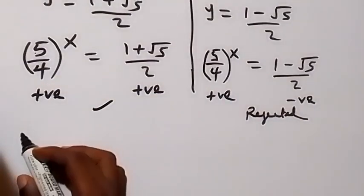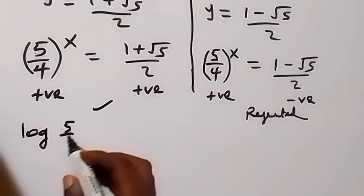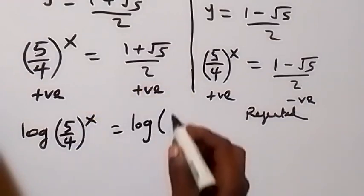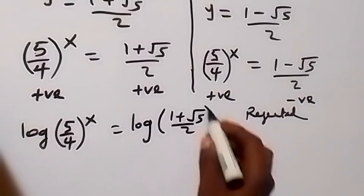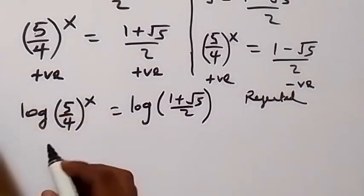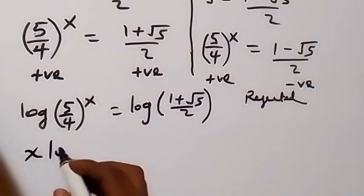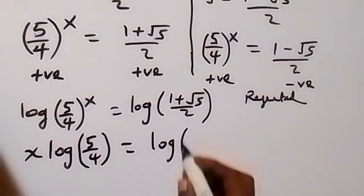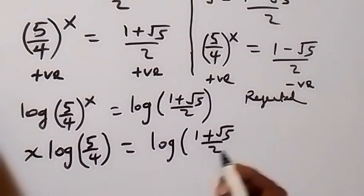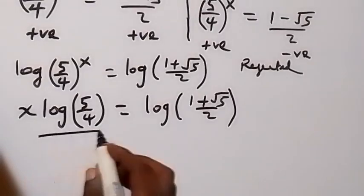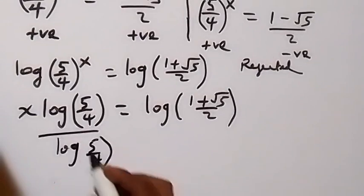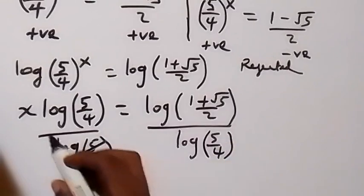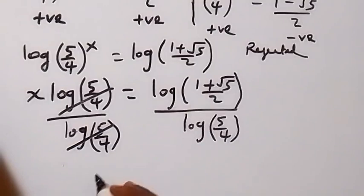From here we take the log on both sides: log of 5 over 4 raised to power x equals log of 1 plus root 5 over 2. Applying the power law of logarithms, we bring x down: x times log 5 over 4 equals log of 1 plus root 5 over 2. Dividing both sides by log 5 over 4, the log 5 over 4 cancels and we isolate x.